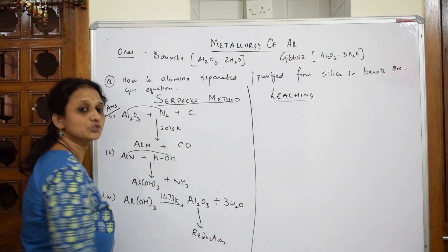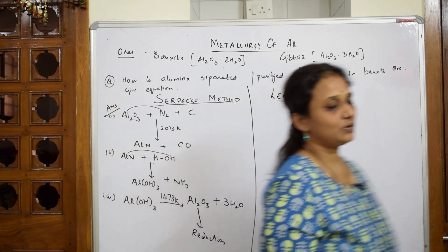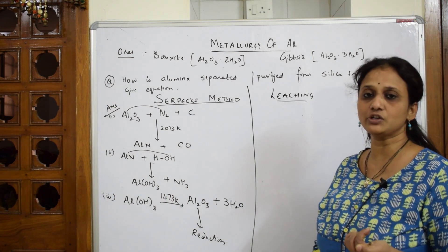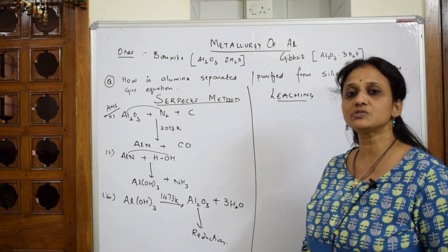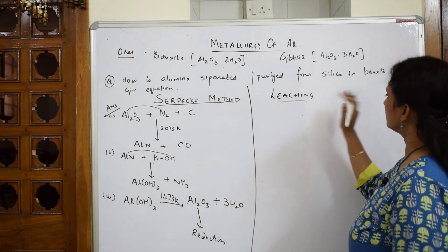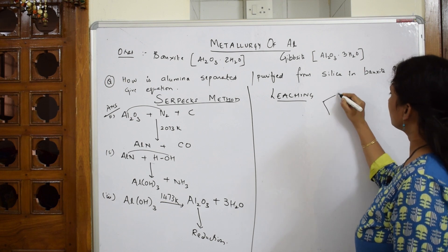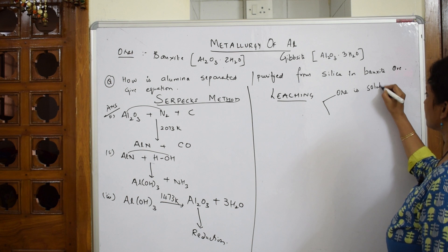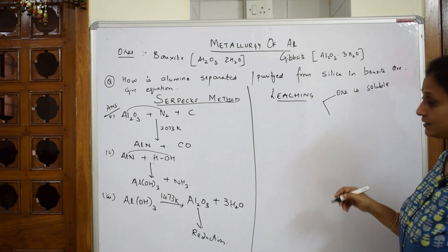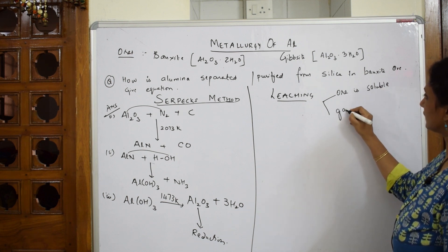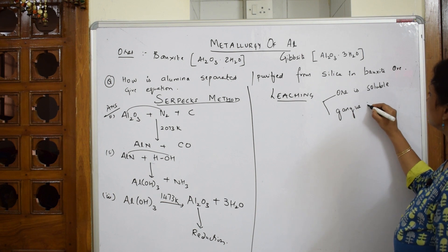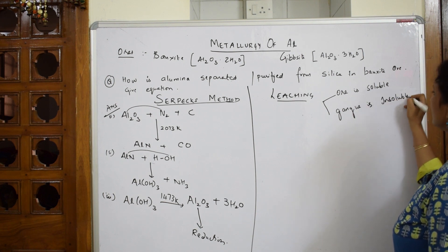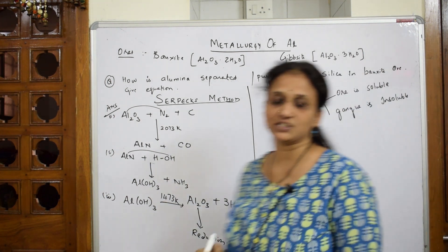Now let us come to leaching. Leaching is based on the concept that the ore is soluble in the particular base which we add, while the gangue particles or impurities should be insoluble. With this concept, we can easily dissolve the ore and separate out the gangue.